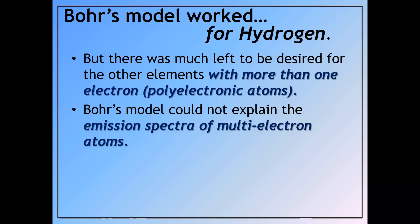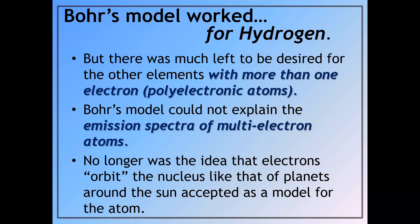Bohr's model could not explain the emission spectra of multi-electron atoms, and therefore, we had to really revise that model. So no longer was the idea that electrons orbit the nucleus, like planets around the sun, accepted as the model of the atom. So we had to do some revisions.